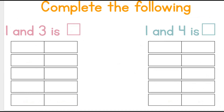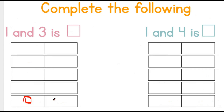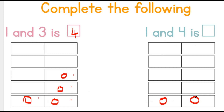One and three is... One, two, three. Let's count this carefully: one, two, three, four. Yes! One and three is four. How about one and four? One, two, three, four. Let's count together: one, two, three, four, five. One and four is equal to five.